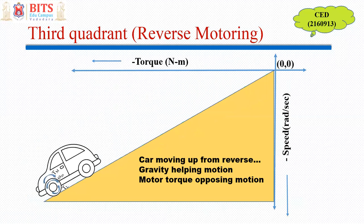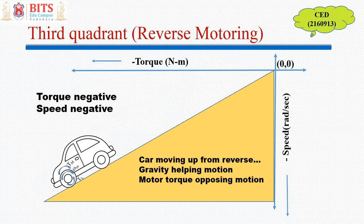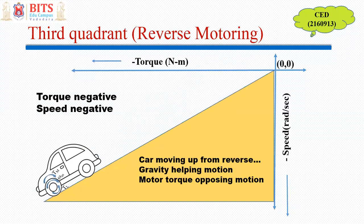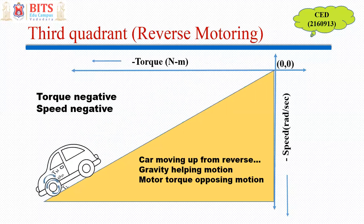The third quadrant is when the car moves in the reverse direction. Compared to the forward direction of rotation, the motor now moves in the opposite direction, so we consider it as negative speed. Since torque is also supporting this negative speed, it is negative torque — not braking but negative torque supporting negative speed. When the car moves upward in the reverse direction, it is called reverse motoring. Here, load acts downward opposing the motion, and motor torque TM supports the motion. This is motoring operation in the reverse direction.